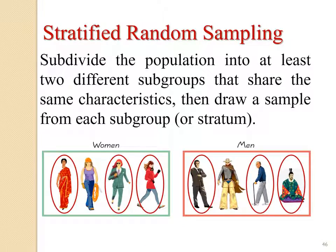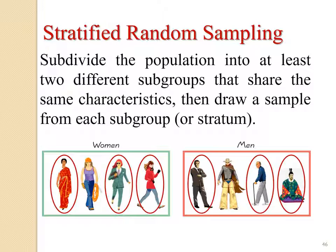Stratified random sampling: subdivide the population into at least two different subgroups that share the same characteristic, then select a sample from each subgroup. For example, we divide the population into a blue group and a man group, then select a sample from each stratum. This type is called stratified random sampling.